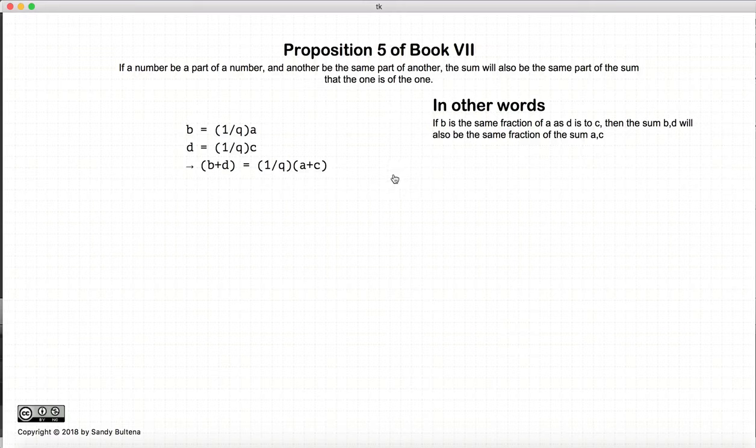So, in this proposition, what we're basically stating is if we have two numbers a and c, and two parts being the same fraction, represented by b and d, then if we add b and d together, and we add a and c together, we will have the result where b plus d is the same fraction of a plus c. So, this is what we're trying to prove.